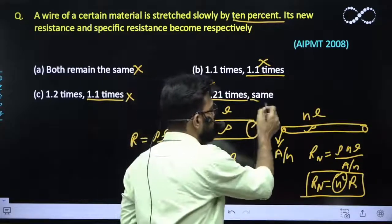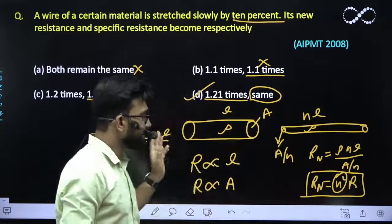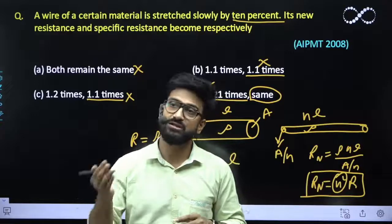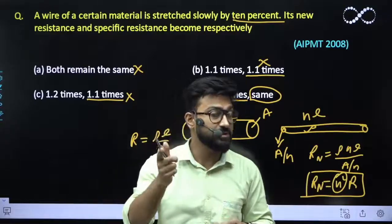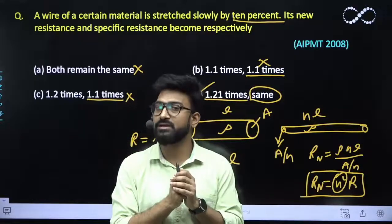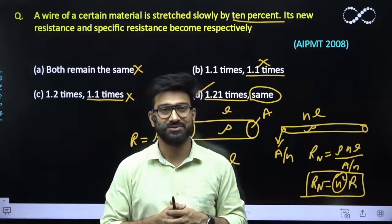So you need not calculate everything. You just remember one thing, if length increases so that means the resistance should also increase but the specific resistance or the resistivity of a material remains same because it only depends upon nature of the material taken. I hope this question is clear to everyone, thank you.